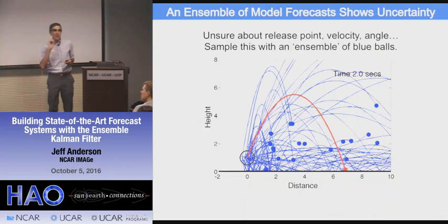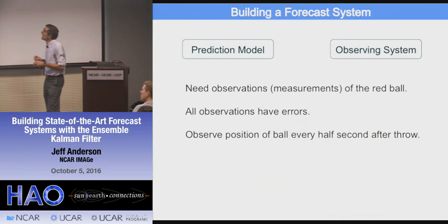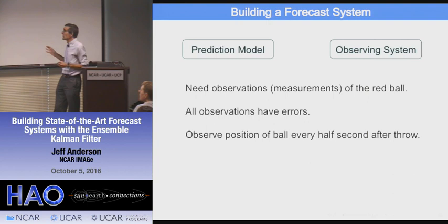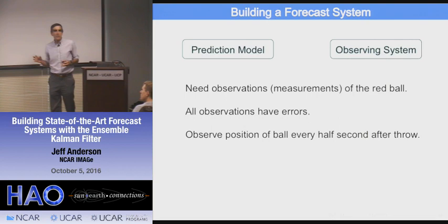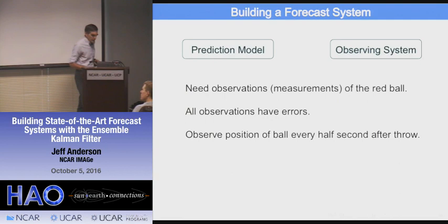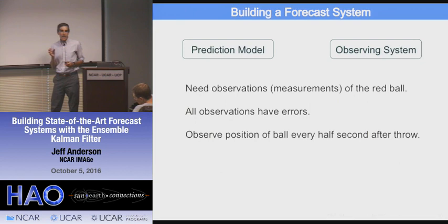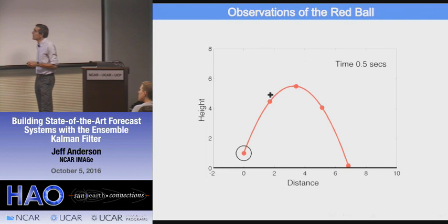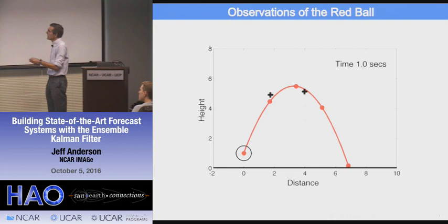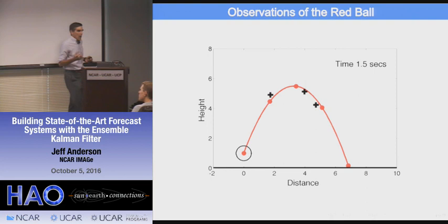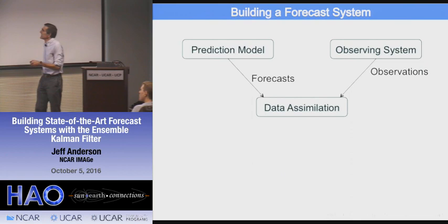In order to build a prediction system, we need more than just the prediction model. We need an observing system — some type of measurements of what the ball is doing as it's released and after it's released. Fundamentally, all observations have errors associated with them, so we'll have some noisy observations. In this idealized problem, I'll assume that every half second of the two-second trajectory I have a noisy observation of the position of the ball. Here's one at half a second — it's a little bit off. I get another one half a second later with a little bit more error.